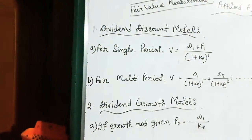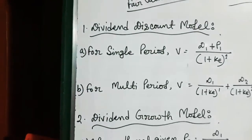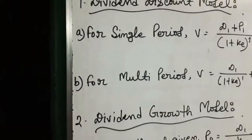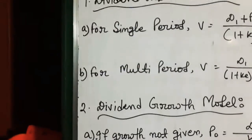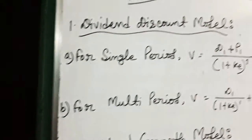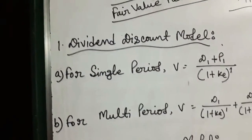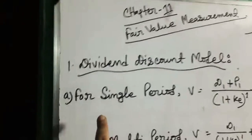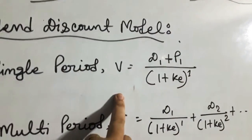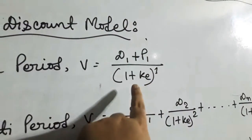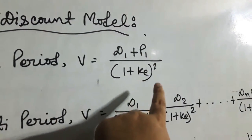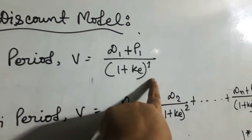If you look at the share period or time — if you look at the share period in 2010 — it will be a single period. It will be D1 plus B1 divided by (1 plus ke) to the power 1.